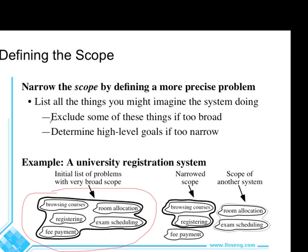We might decide to exclude room allocation, exam scheduling, and fee payment — since fee payment is handled by another system quite well — and that brings us down to a narrower scope: browsing courses and registering. We may also decide to adjust the goals repeatedly, making them broader or narrower. For example, rather than just registering, it might be registering in a set of courses that best reflects the student's career choice, or allowing students to register so they have the prerequisites for courses they will need later on. We want to examine our goals and improve them so the system we develop will be better.